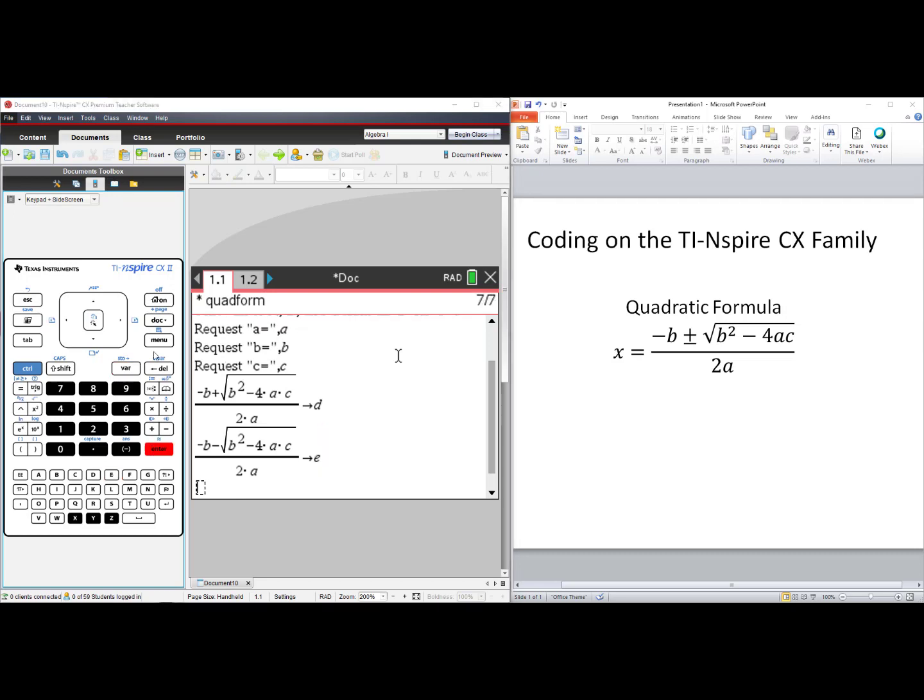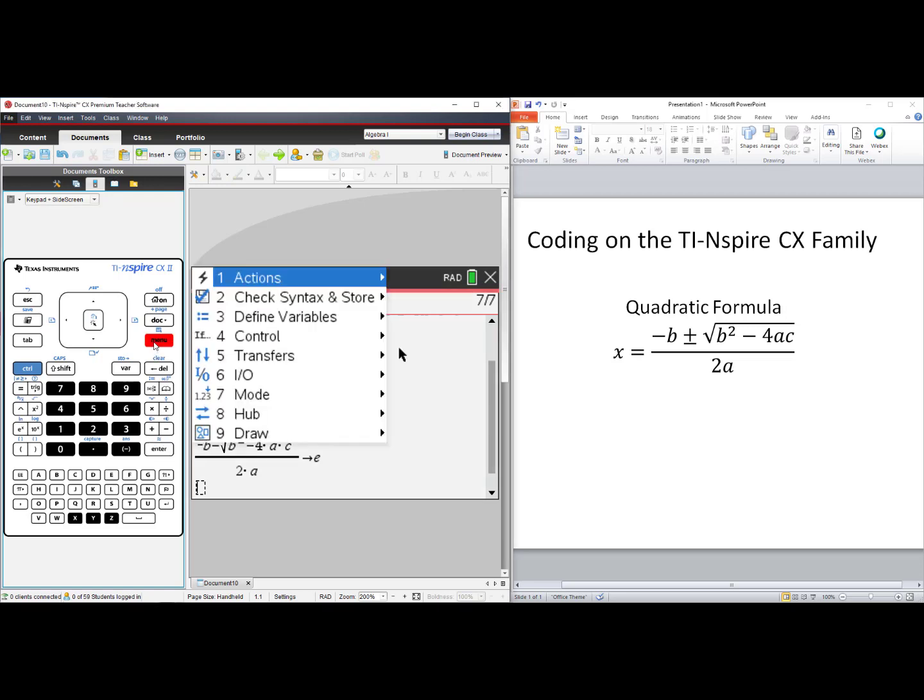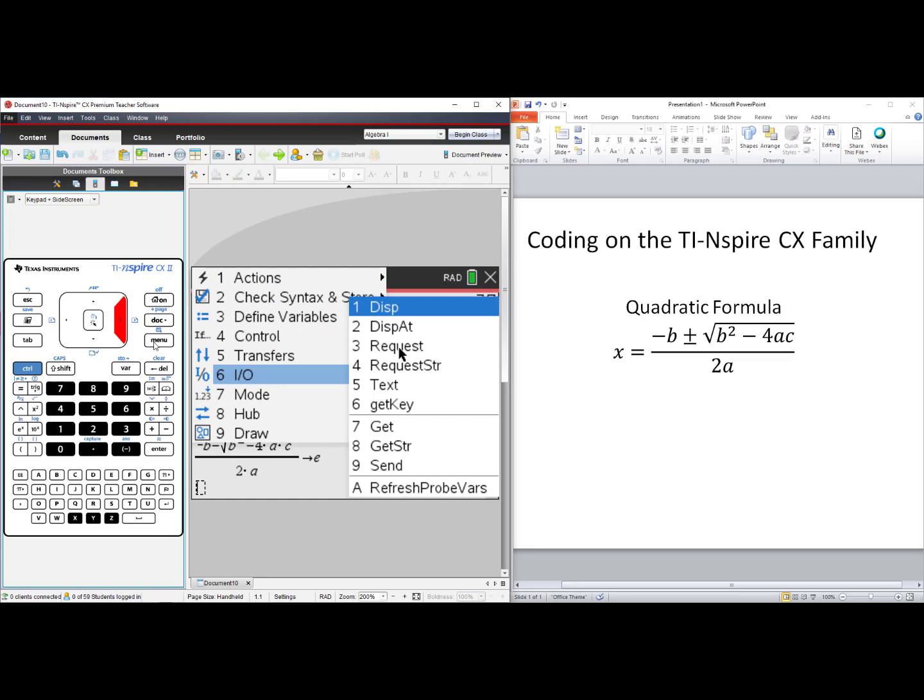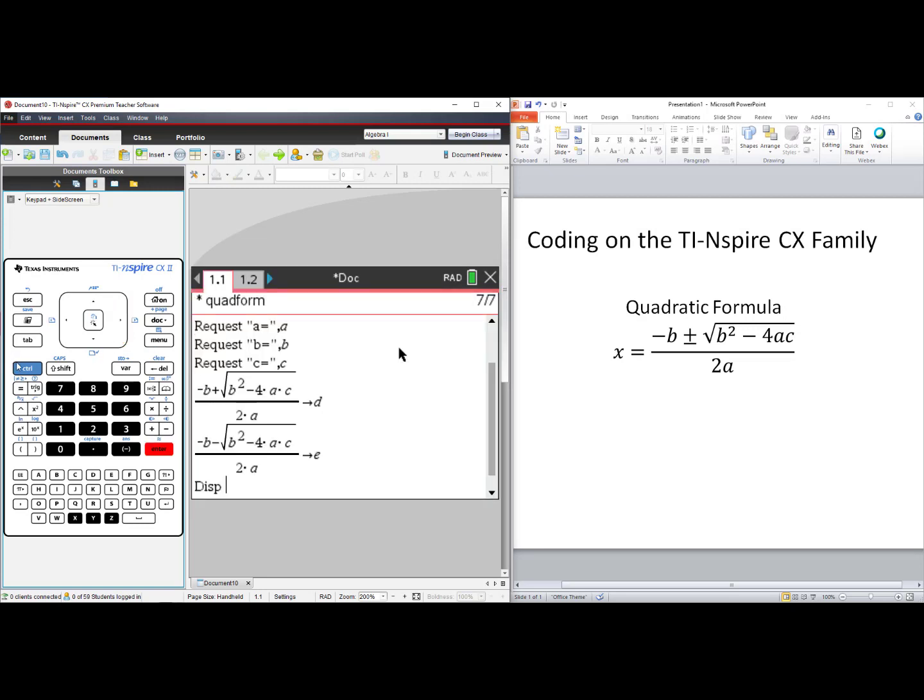We are now ready to display our answer to the user. Press Menu, choose number 6, Input Output, choose number 1, Display. Press Ctrl-Multiplication for the quotes, and anything you type in the quotes will display on the screen. I will type in: the solutions are. I'll right arrow to get out of the quotes, put in a comma, put in the first solution D, comma, second solution E.